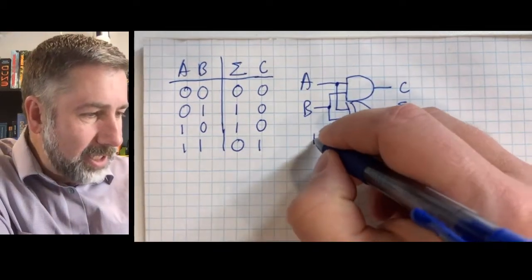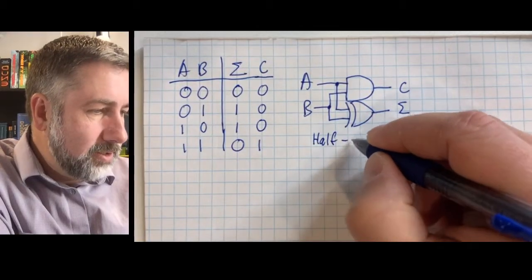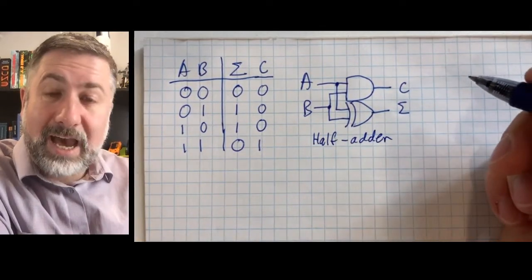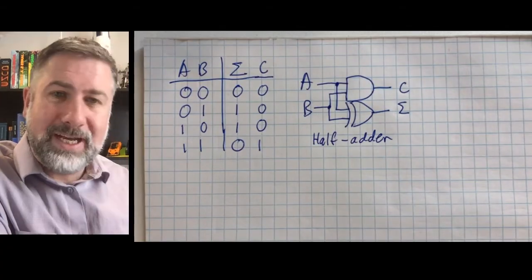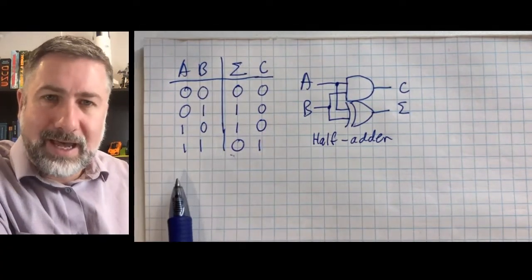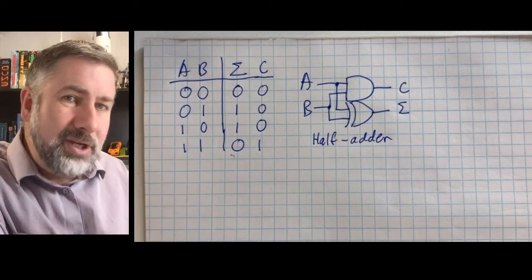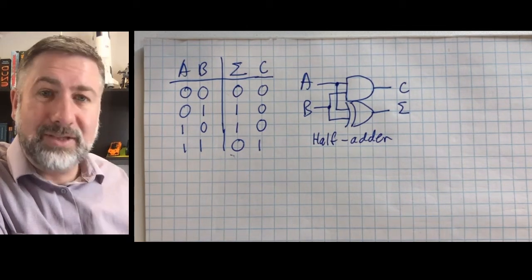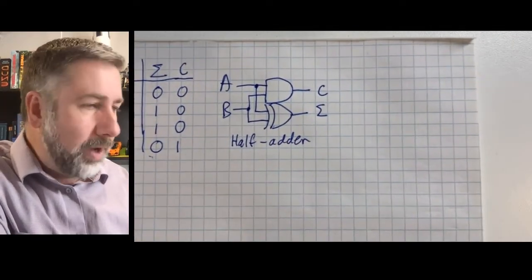Why do we call this a half adder? Well, we'll see in a second. It's a half adder because if we actually take this device and try to build out an addition system that is going to do more than one bit, we'll see that we have a problem — and some of you may already have detected what might happen.